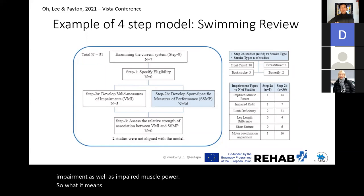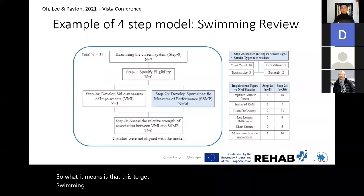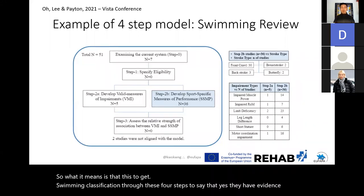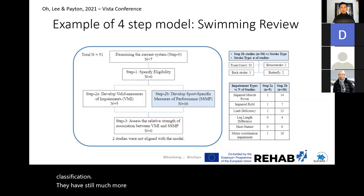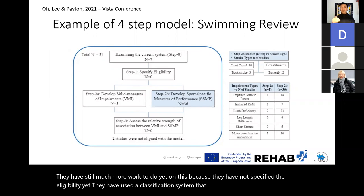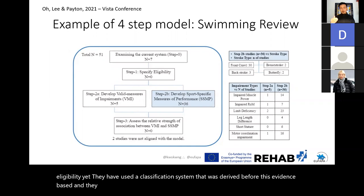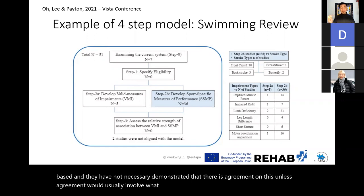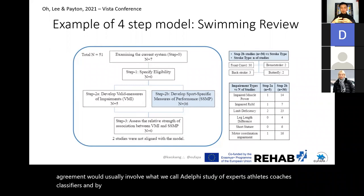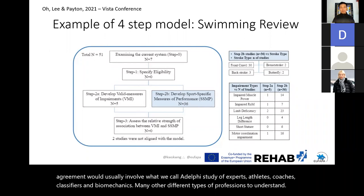To get swimming to eligible evidence-based classification through these four steps, there is still much more work to do. They have not yet specified eligibility, they used a classification system derived before this evidence-based approach, and they have not necessarily demonstrated agreement. This agreement would usually involve a Delphi study of experts, athletes, coaches, biomechanics professionals, and many other types of professions to understand what the right levels of eligibility are for the different classifications.